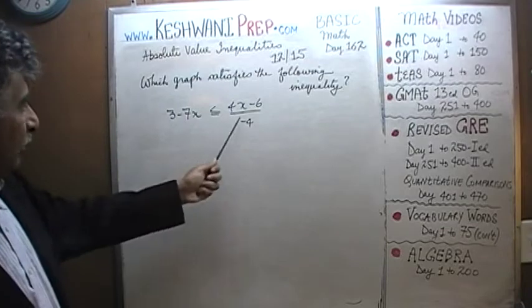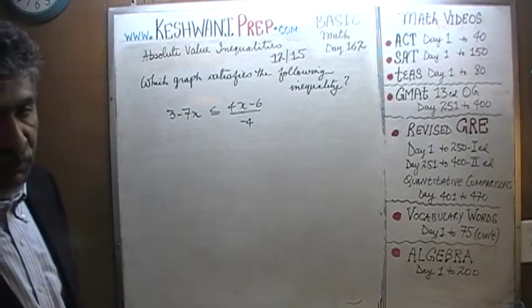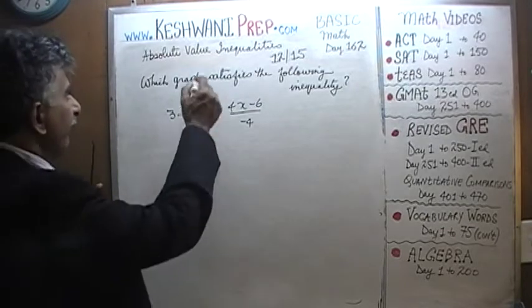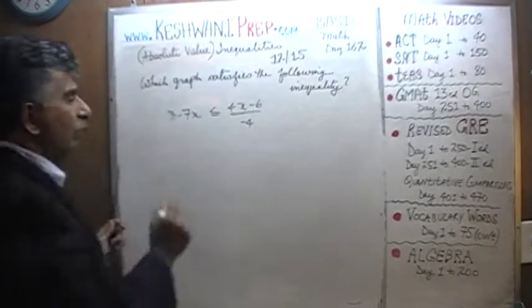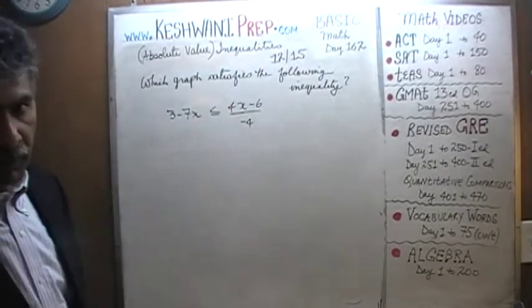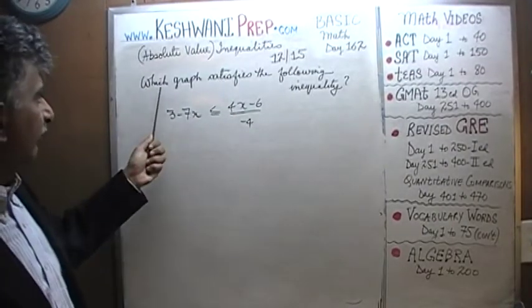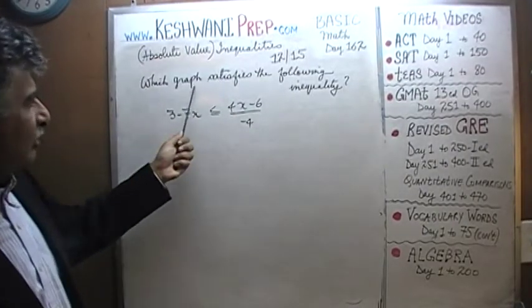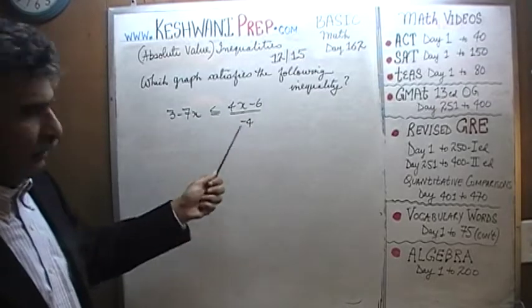This problem, as you can see clearly, does not have absolute value. It doesn't involve absolute value. It's just a regular inequality. Here's how the problem goes: it says which graph satisfies the following inequality.